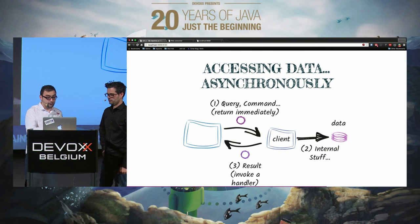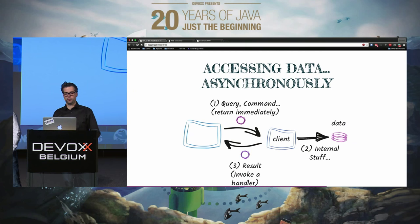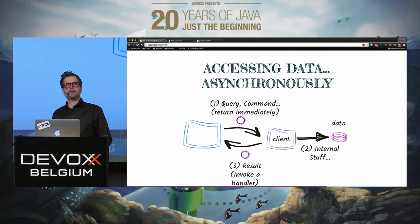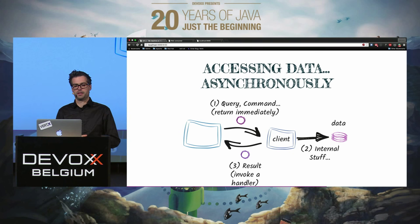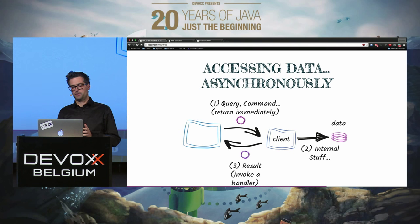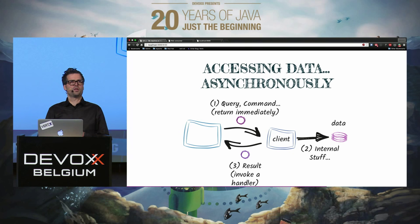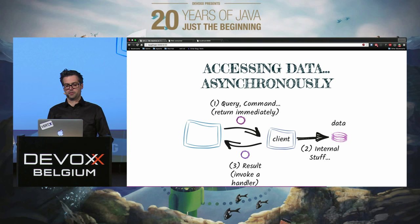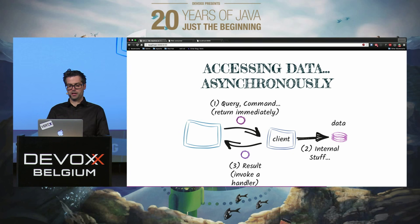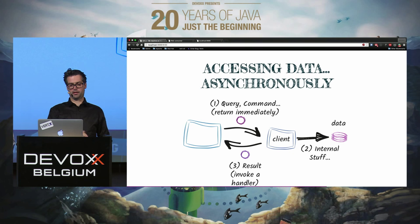Since JDBC is not asynchronous by nature, we have a JDBC client component that transforms async calls into JDBC. You create a query or command, pass it to the client along with a handler. The client connects to the database, gets the data, wraps it in a format you understand, and invokes your handler with the result.